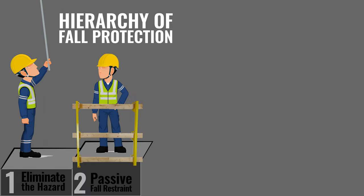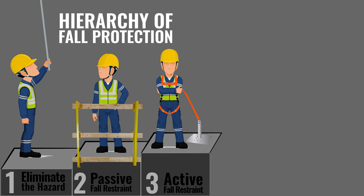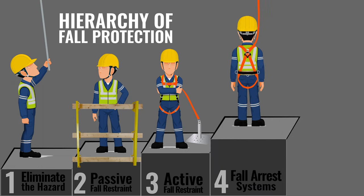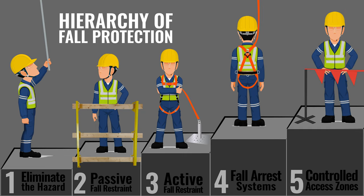You're not in a harness because you're not in the neighborhood of a fall. Then you go to active restraint, where part of your PFAS is preventing you from getting to the area where you would have a fall. Then you move to arrest, where you can experience a fall, but your fall would be arrested.